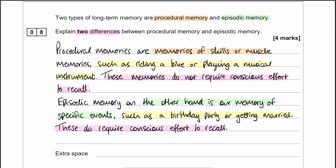I'll start off with saying what procedural memories are — memories of skills or muscle memory. Then in the second paragraph, on the other hand, you've got episodic memory, which is our memory of specific events. The second difference is memories that don't require conscious effort to recall versus memories that do require conscious effort to recall. So procedural memory does not require conscious effort, whereas episodic memory does.